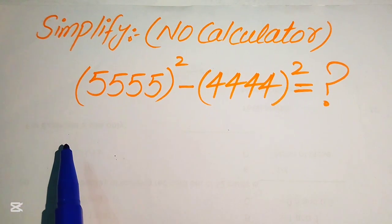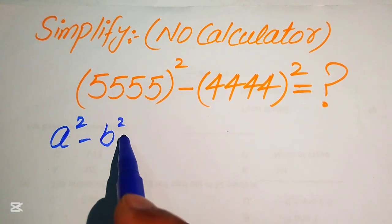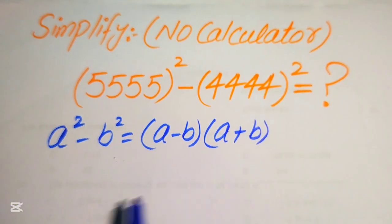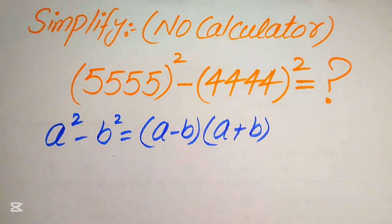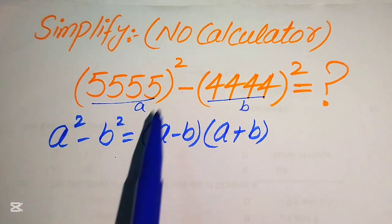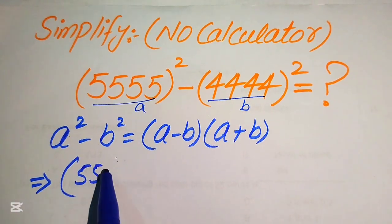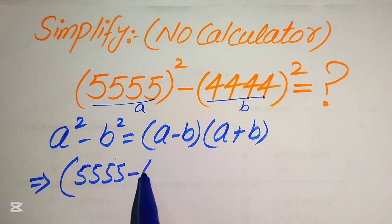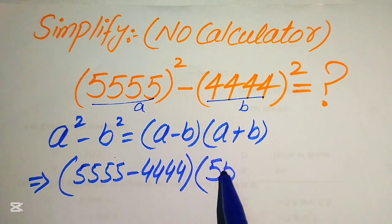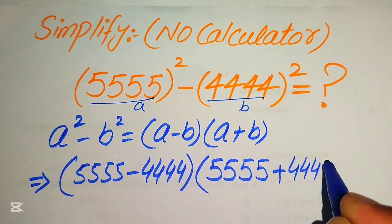The first thing we do is apply the algebraic formula: a squared minus b squared equals (a minus b) times (a plus b). According to this formula, with a = 5555 and b = 4444, the expression is written as (5555 minus 4444) multiplied by (5555 plus 4444).